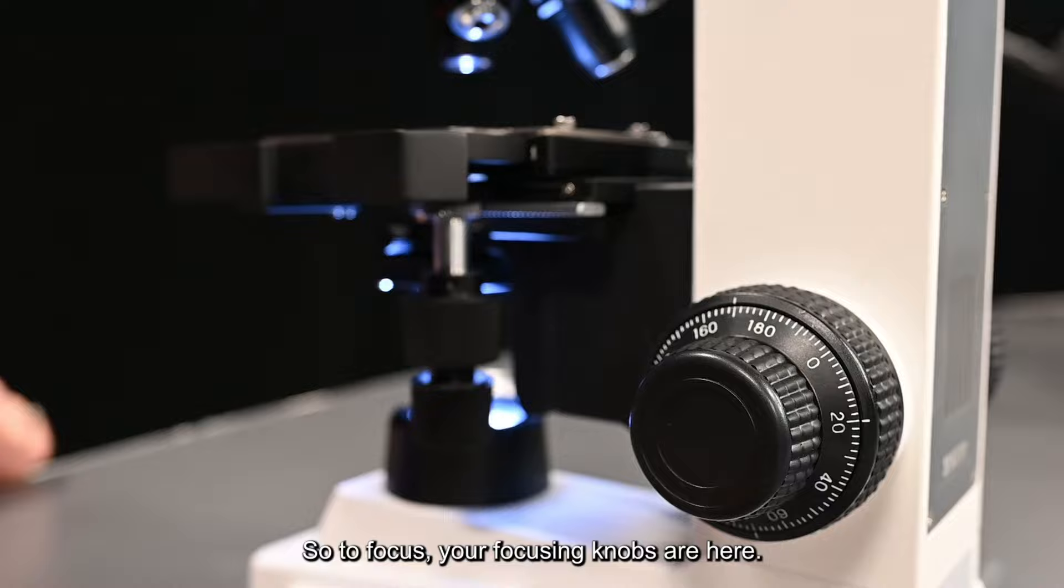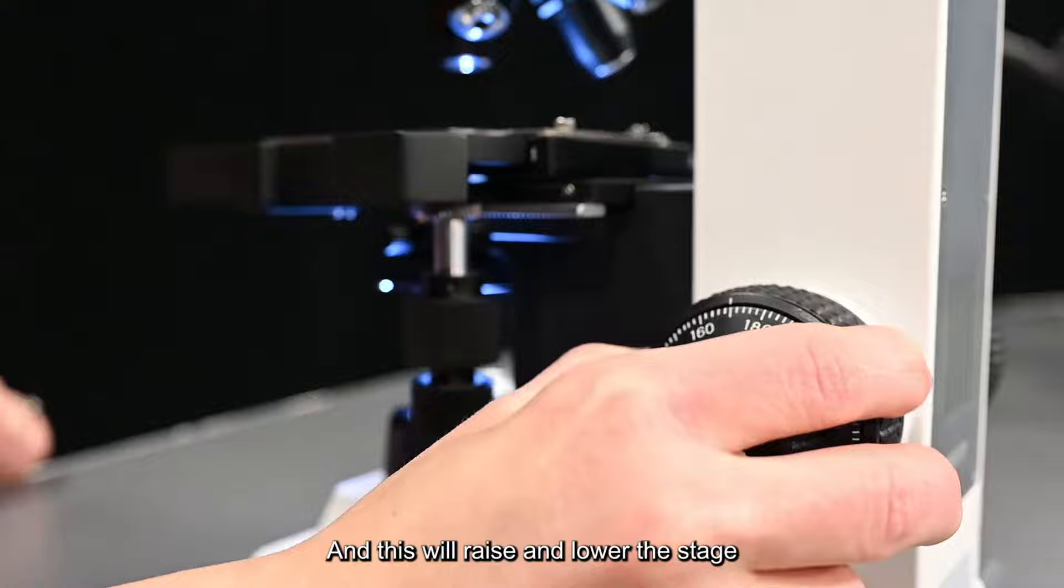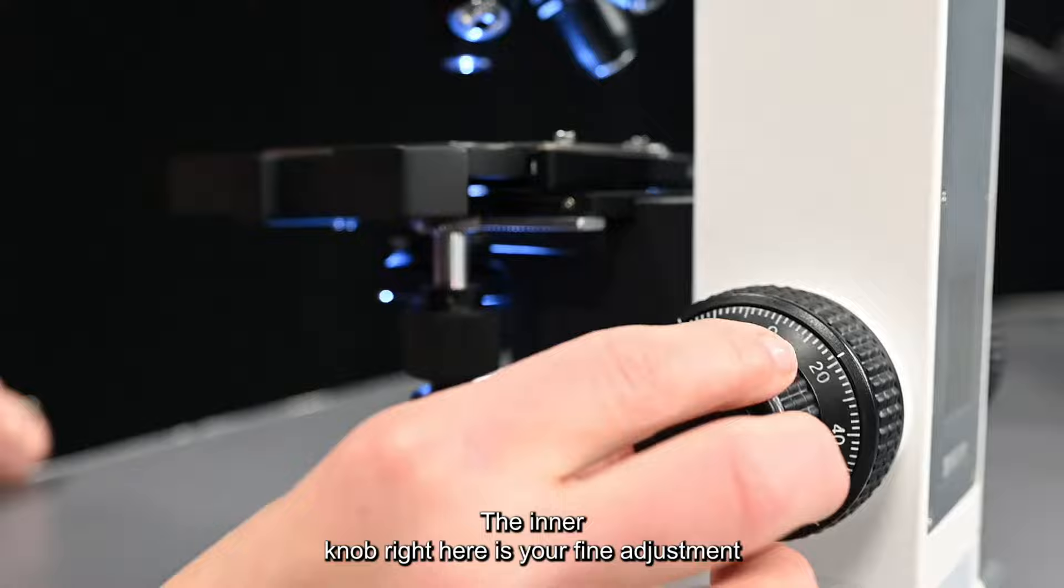To focus, your focusing knobs are here and this is actually a double knob. The outer part of it is what we call your coarse adjustment and this will raise and lower the stage to make really large adjustments to your focus.